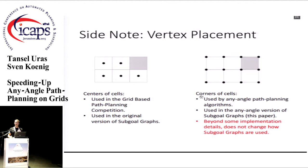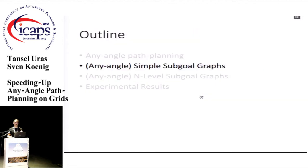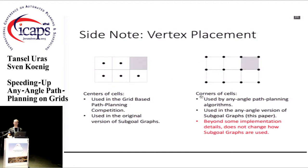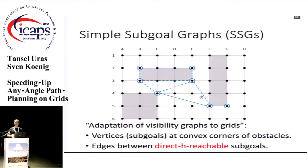Before discussing simple sub-goal graphs, I want to mention that in the original version of sub-goal graphs, vertices are placed at the centers of grid cells, but for the any-angle version, we move them to the corners of grid cells, as most other any-angle path-planning algorithms do. This doesn't change how they operate. Simple sub-goal graphs are essentially visibility graphs on grids — we place sub-goals at the convex corners of obstacles, but instead of connecting all pairs of visible vertices, we connect vertices that are direct edge-reachable.